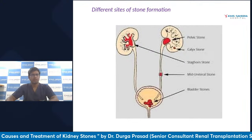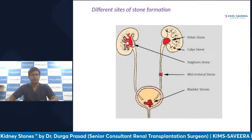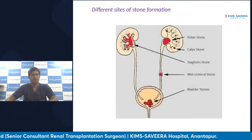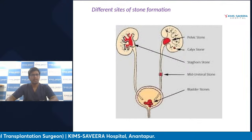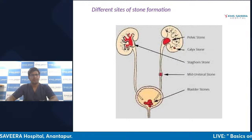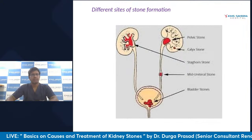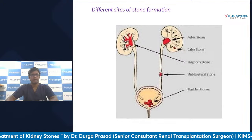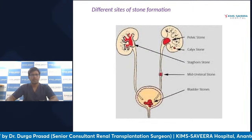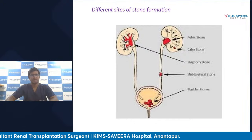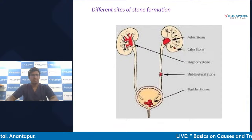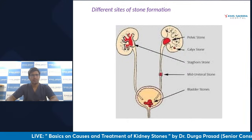Stones can form in the main part of the kidney, or they can fill the entire kidney — we call that a staghorn stone. In the ureters, stones can happen in any part: upper, mid, or lower ureter — we call those ureteric stones. People are often confused between kidney stones and ureteric stones. There are different areas: kidney, ureter, bladder, and urethral passage — each is a distinct location.